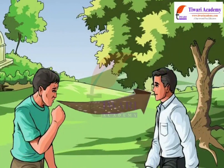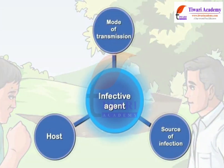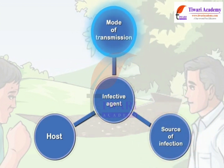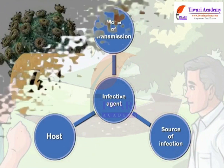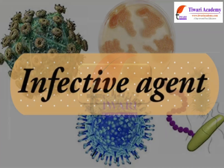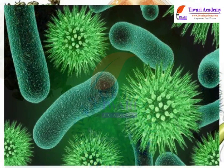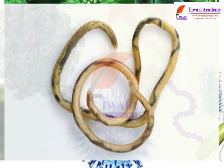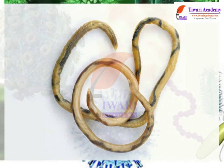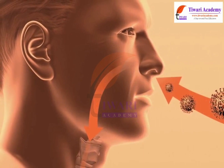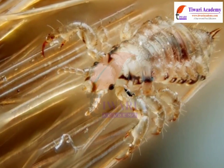There are four crucial factors for the spread of communicable diseases: the infective agent, the source of infection, the mode of transmission, and the host. An infective agent is a micro-organism — e.g., bacteria, viruses, fungi and parasites — that causes an infection. The source of infection refers to any environment in which infective agents can live, parasitize and breed.